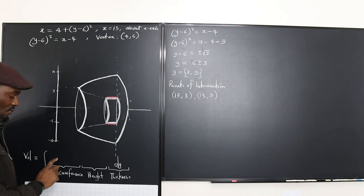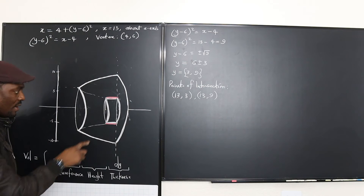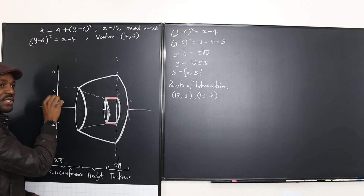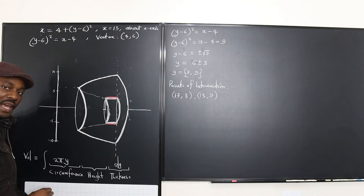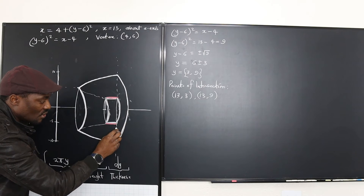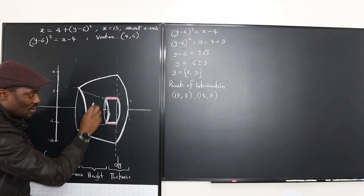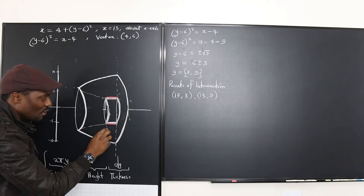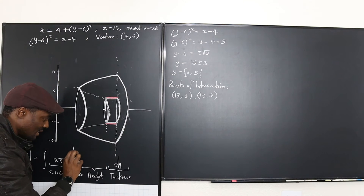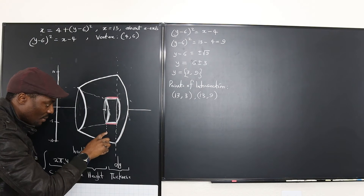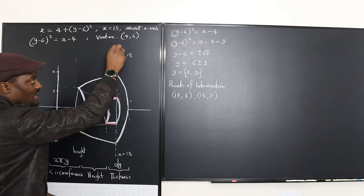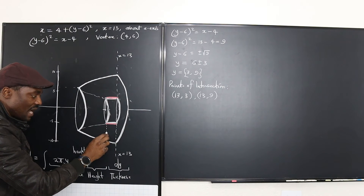For the circumference, it's 2πr. What is the radius of the cylinder? The radius is the distance from the center to this point, and at any time this point is always what you can read on the y-axis. So the circumference is 2πy. For the height, the beginning is here and the end is here. The distance from here to here is your height, which is x = 13 minus whatever x you have on the curve.